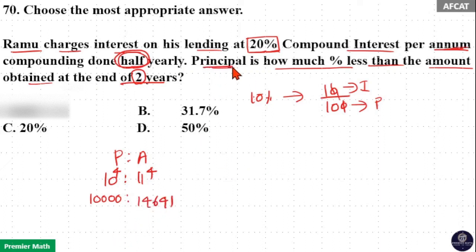Now principle is how much percentage less than the amount. We need to find that. Here take the difference between principle and amount which is equal to 4641.